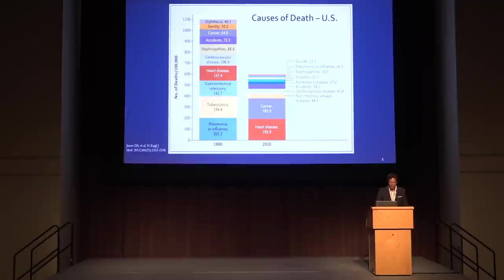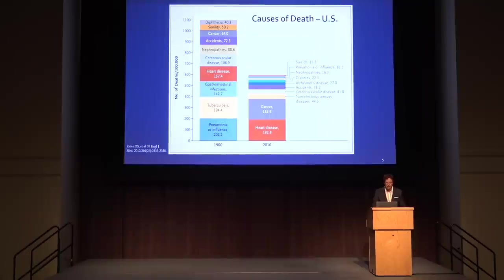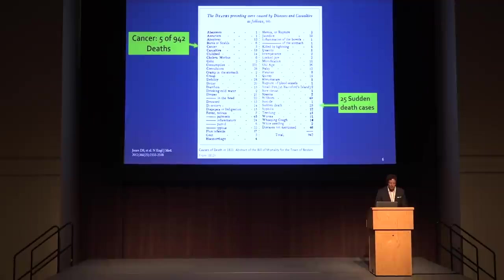Looking at causes of death, 1900 versus 2010 — from Joan's paper in 2012 — you notice on the left, in 1900, the top three causes of death: pneumonia, tuberculosis, and gastrointestinal infections are all infectious. Whereas in 2010, seven of the top ten causes of death are chronic diseases: heart disease, cancer, COPD, diabetes, and so on. We'll come back to this.